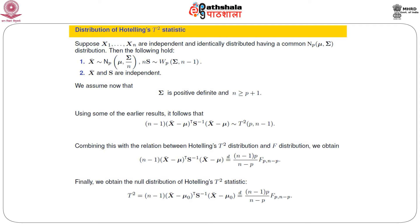Once we have the data ready, we compute X-bar, compute S, compute S-inverse, then compute this quantity and compare with the corresponding F distribution quantity. That concludes the discussion about inference about a mean vector when there is no restriction on the mean.